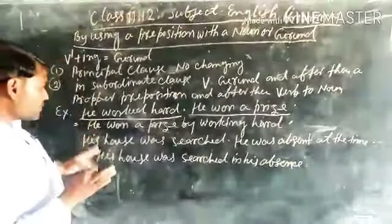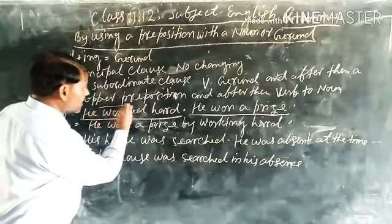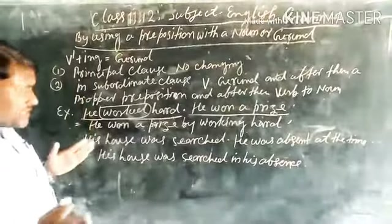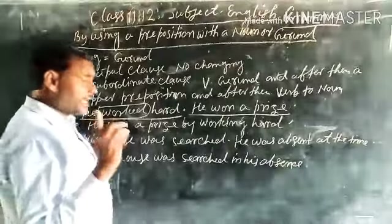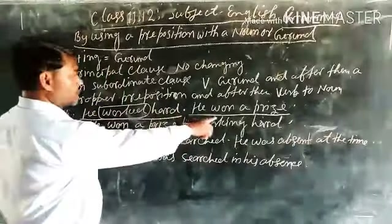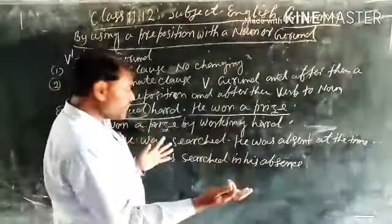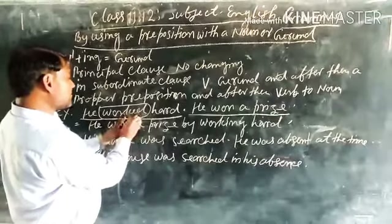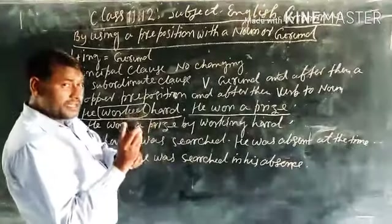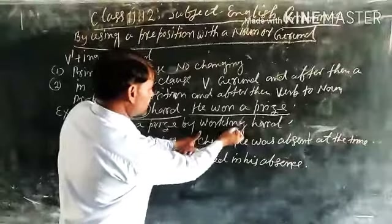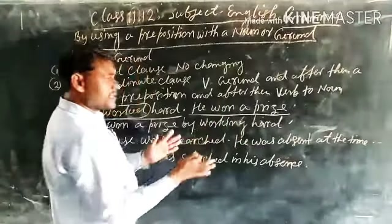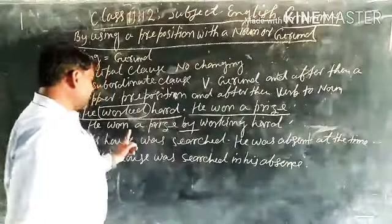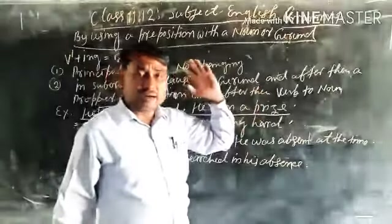You have to change this subordinate clause verb into a gerund. Before the gerund, you have to add an appropriate preposition. So, this is the principal clause — 'He won a prize' — no changes. The verb 'work' is converted into a gerund: 'working.' Before that word, you add the preposition 'by.' So the combined sentence becomes: 'He won a prize by working hard.'